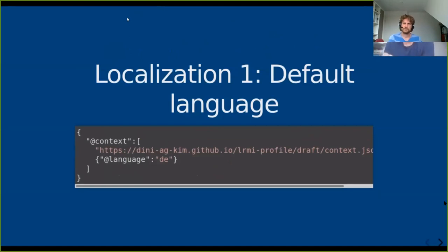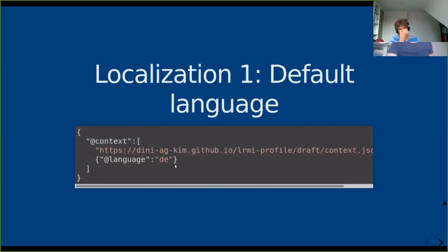We recently implemented some localization. We found it important to add the language of the metadata — the language it is written in — to the metadata itself. This can be done by adding a default language in the context. If I say add language 'de,' each literal string in the data will be tagged with German. We also have the possibility for values from the controlled vocabulary to add different languages: if we have a SKOS vocabulary level with multilingual labels, we can add them to the JSON data.